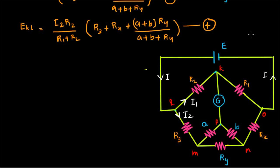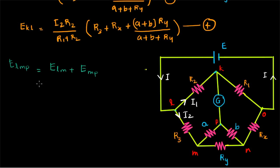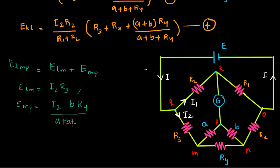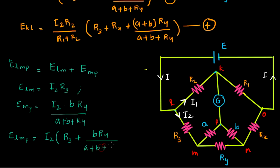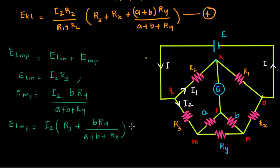Now we are going to find E_LMP so that we can equate E_LMP and E_KL. E_LMP is the potential along the path LMP and we can divide it into two parts: E_LM and E_MP. From the figure, E_LM is equal to I2 multiplied by R3, and E_MP is equal to I2 multiplied by B times RY divided by (A plus B plus RY). Adding these two gives E_LMP equal to I2 multiplied by R3 plus (B times RY) divided by (A plus B plus RY). Let us call this equation number 5.